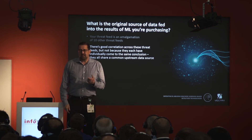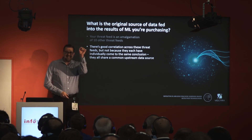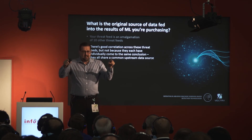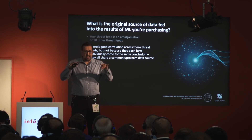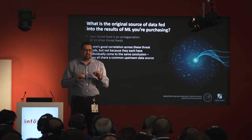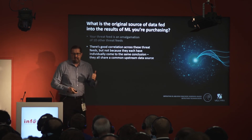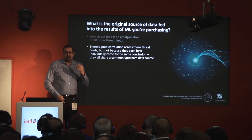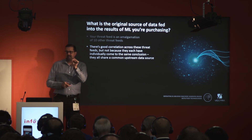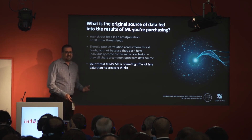The conclusion they're drawing is actually flawed because their opinion is based on the opinions of people above them, who are all operating off the same data sources. What could be happening is that a single data source at the very top, as it branches out, appears to be four data sources. They all vote yes. It gets to the next layer — four data sources agreed, thumbs up. So you conclude that many parts of your system agree, when in fact they all stem from one data source at the very top of the tree. Your threat feed ML is operating off far less data than it thinks.